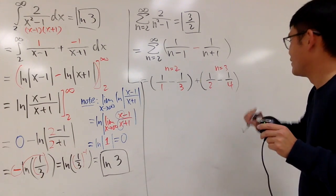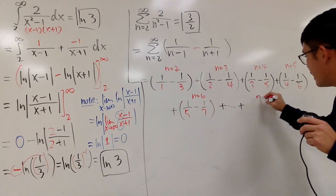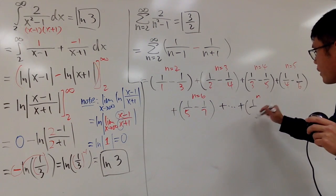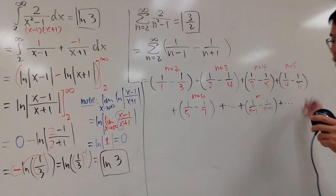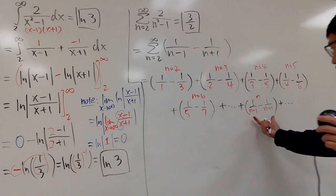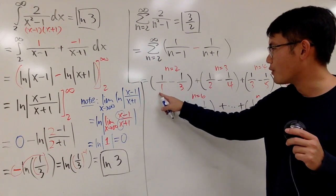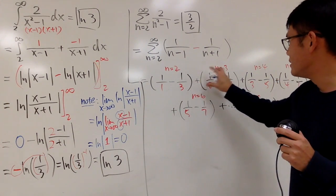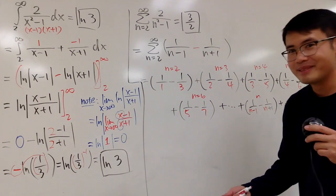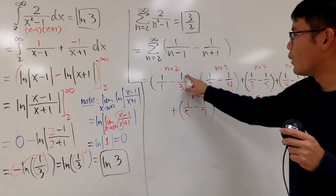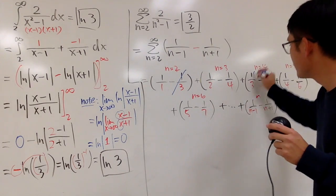Write down a few more terms because you can see a nice pattern. Also write down the nth term: 1/(n-1) - 1/(n+1). Now look at what happens: the first parenthesis has 1 - 1/3. Adding the second parenthesis, notice that here we have negative 1/3 and here we have positive 1/3 — they cancel each other out.